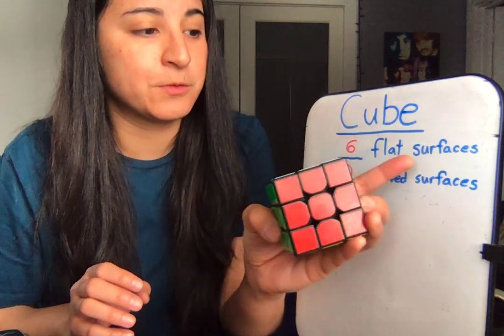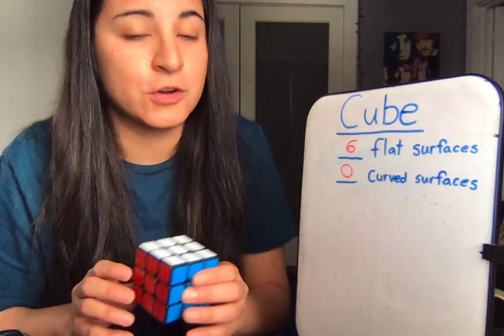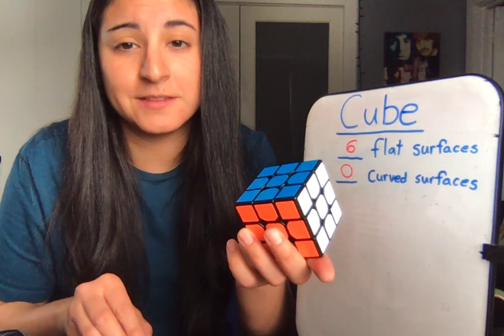Six flat surfaces and zero curved surfaces. This is a cube.